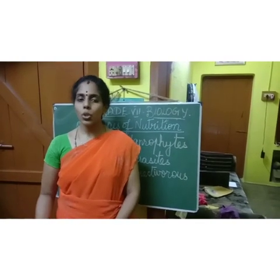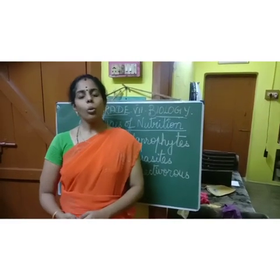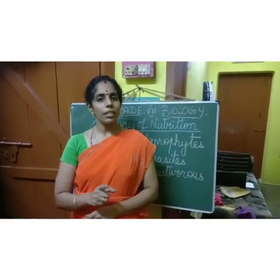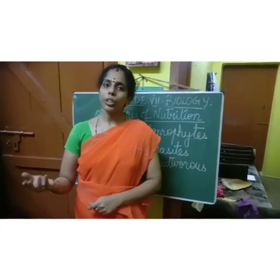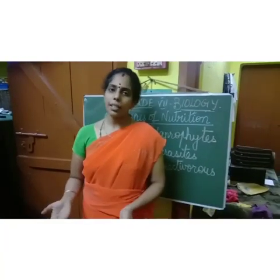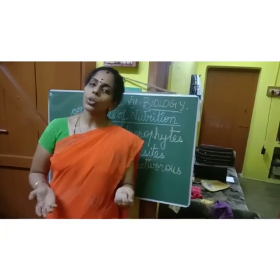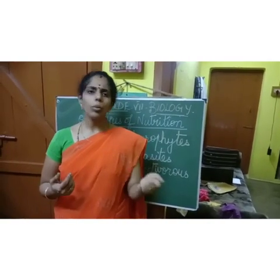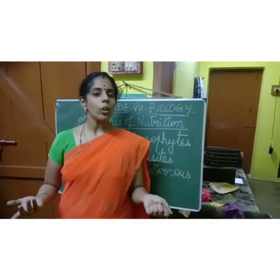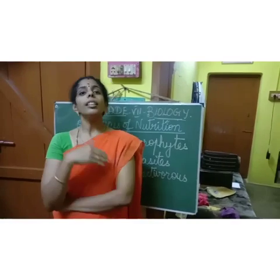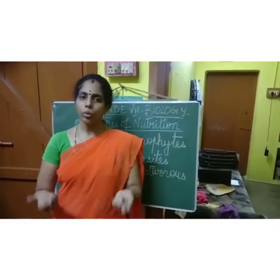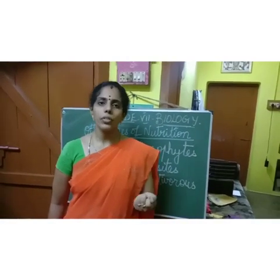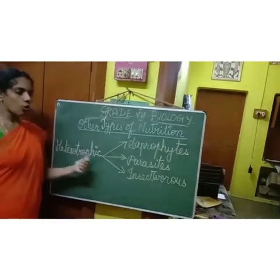Hope children, you have understood what is meant by cell and its structure. Now we shall move to the next topic of the same lesson. At the beginning I told you there are two types of nutrition: one is autotrophic nutrition and another is heterotrophic nutrition. What is meant by autotrophic nutrition? The organisms which can prepare their own food follow autotrophic nutrition. The plants have chlorophyll, so they prepare their own food. If plants do not have chlorophyll, they have to depend upon other plants or animals for their food. Such organisms which depend on other organisms for their food are called as heterotrophs, and that kind of nutrition is called as heterotrophic nutrition.